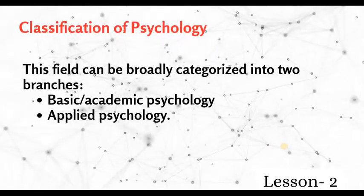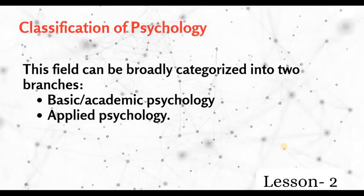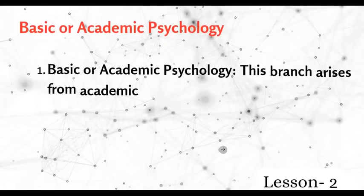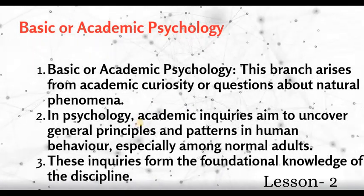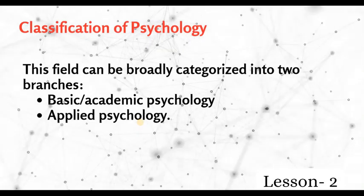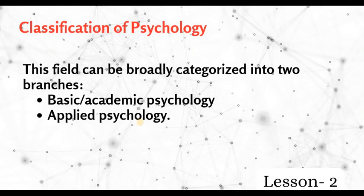Next is the classification of psychology. Psychology is a very varied area and can be broadly categorized into two branches: Basic or Academic Psychology and Applied Psychology. Academic psychology is purely academic in purpose — studies conducted in universities and educational institutions are called academic psychology.